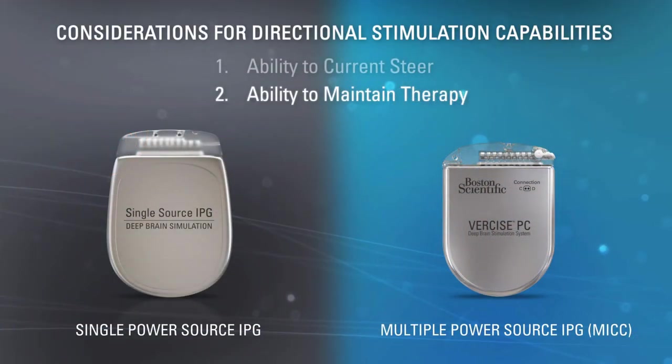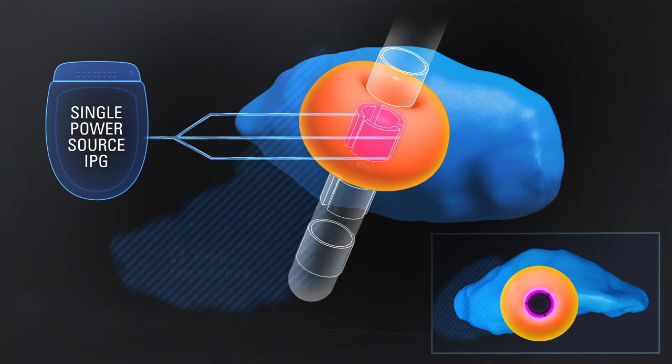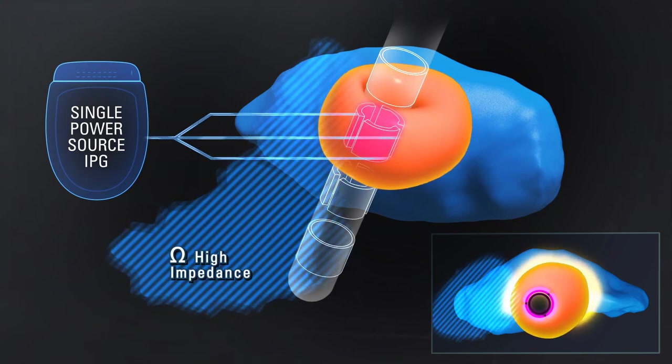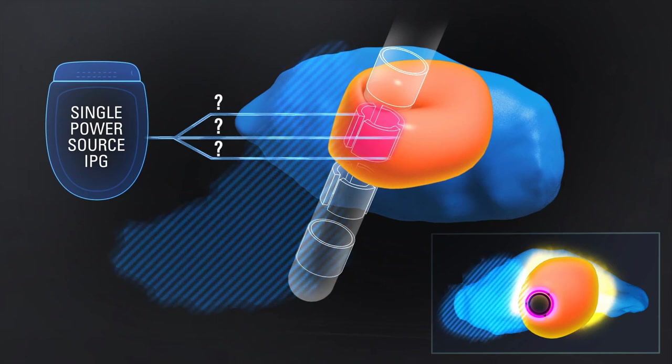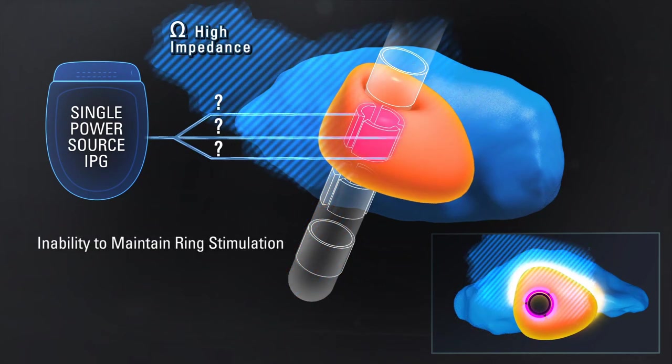Leads that are powered by conventional single-source IPGs are also vulnerable to impedance changes based on their environment. When current is allocated to three adjacent electrodes for standard ring stimulation, in the presence of varying impedances, current will follow the path of least resistance, resulting in unintended or inadequate stimulation. Ring stimulation may not be achievable.